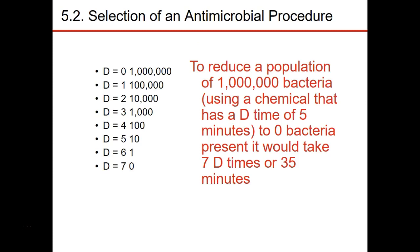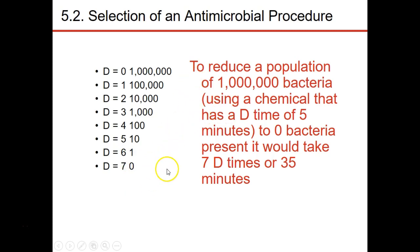So if we have a population of a million bacterial cells and a D time of 5 minutes, it would take about 35 minutes to kill off all the cells. We just take and remove a decimal point — D time, decimal reduction. You go from 1 million to 100,000 in one D time, then 10,000, then 1,000, 100, 10, 1, and then 0.1 — so you've killed the microbe. Since the D time is 5 minutes, 5 times 7 is 35.